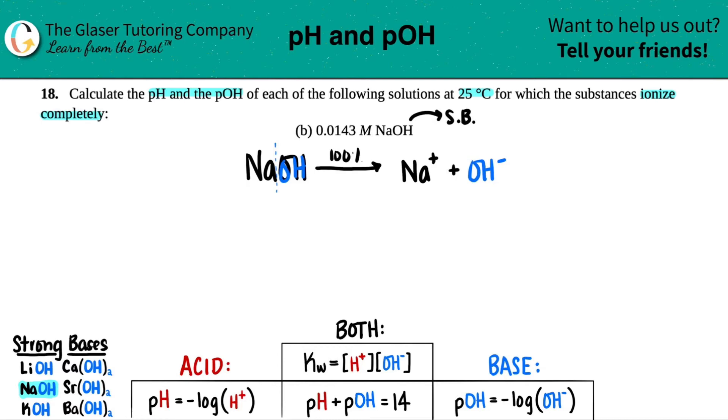Now what does ionize completely mean in terms of numbers? Well, we started off with 0.0143 molarity for NaOH. We just need to transfer those numbers over here, because basically, at the end of the day, you're going to have nothing left here. And all of it is going to be on the product side, because it's 100%. It's going to convert over to the products all the way through.